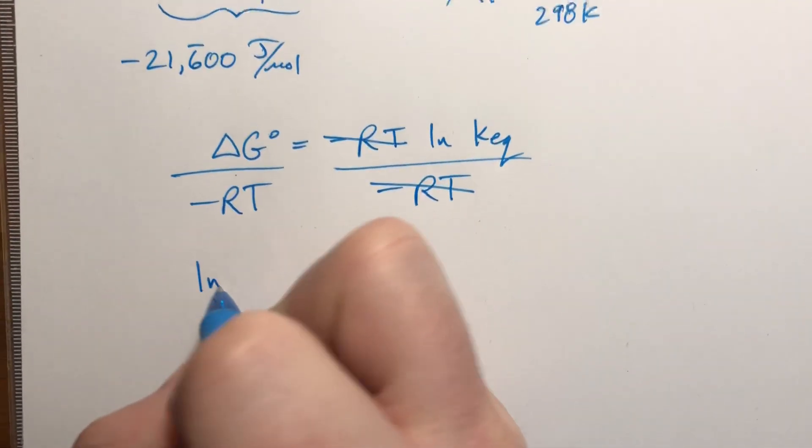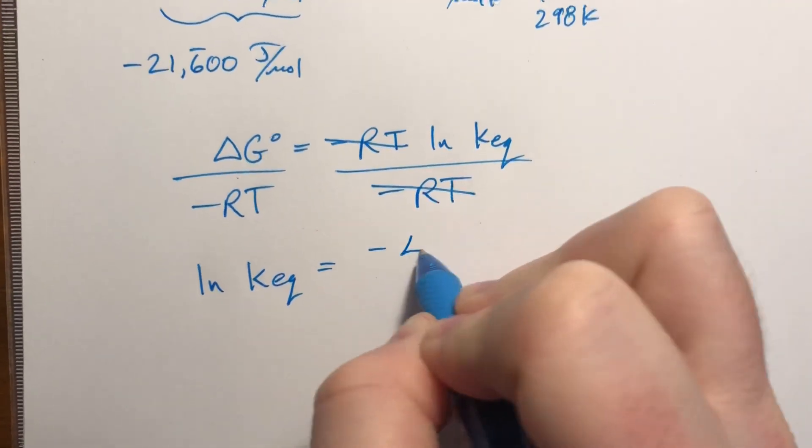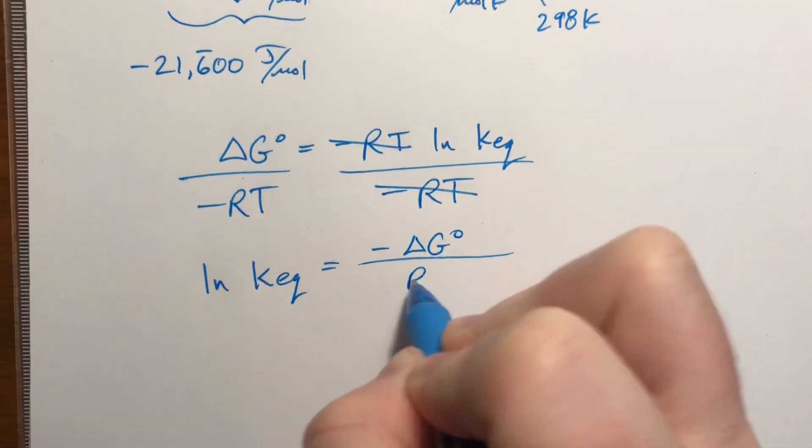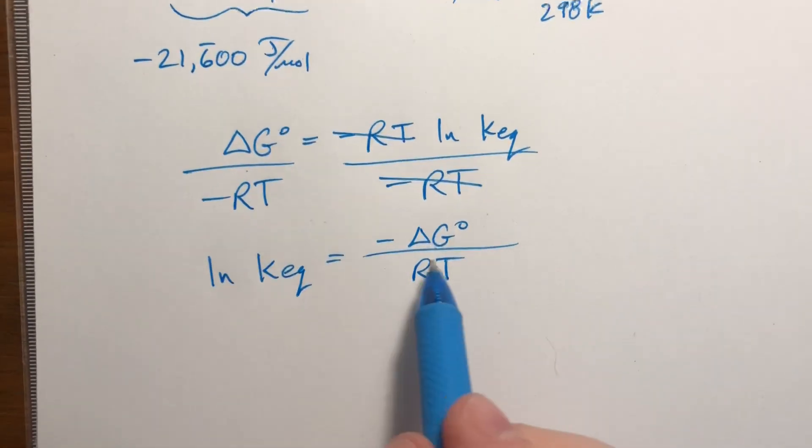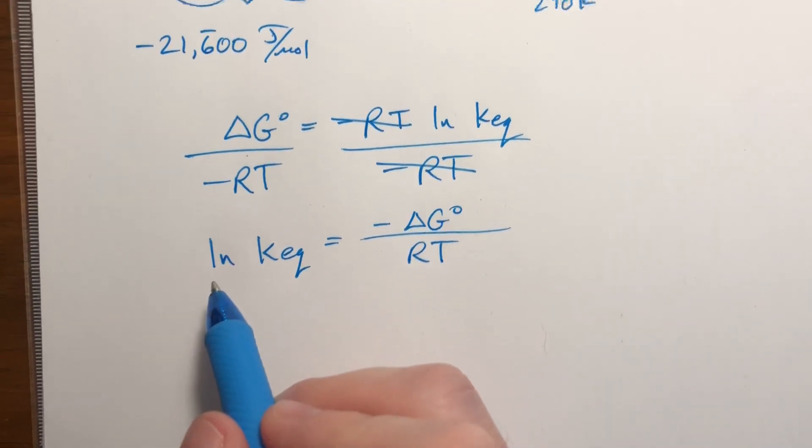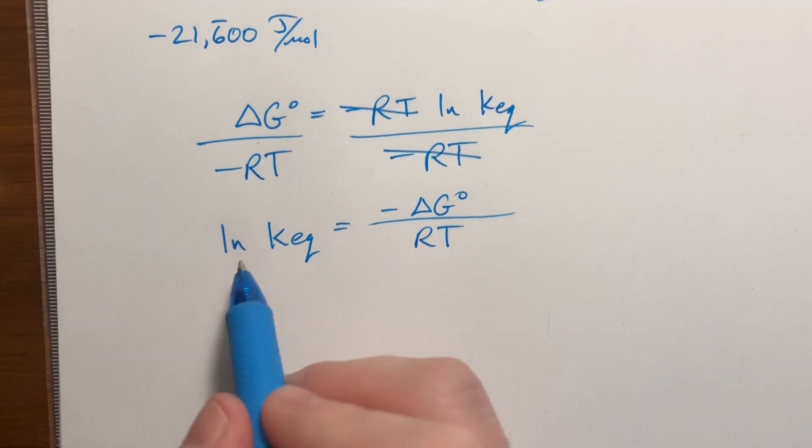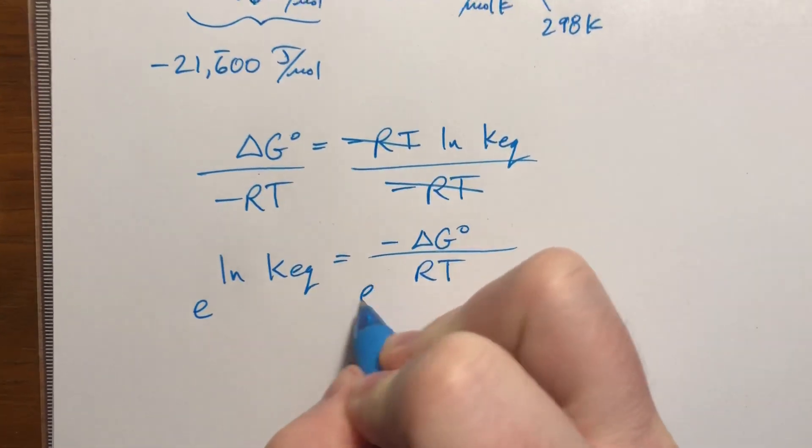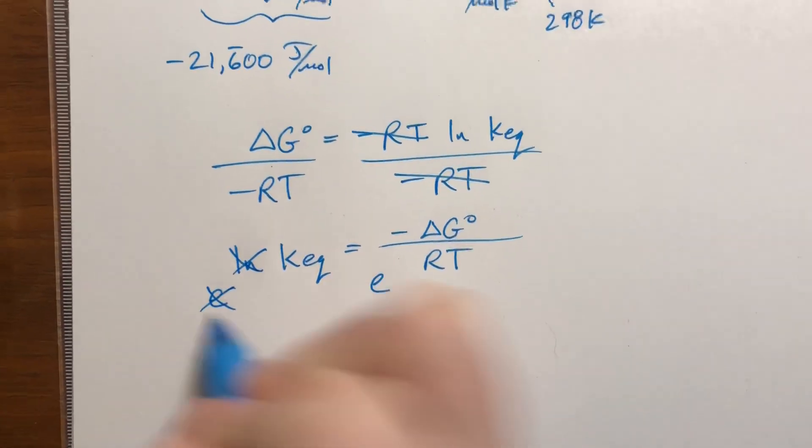I'm going to rewrite it to make it clear what's going on here. Whether the negative is on bottom or on top isn't really important. Now, since this is a natural log, we need to use log, this is log-based E, so we need to do E to the both sides to get that to go away.